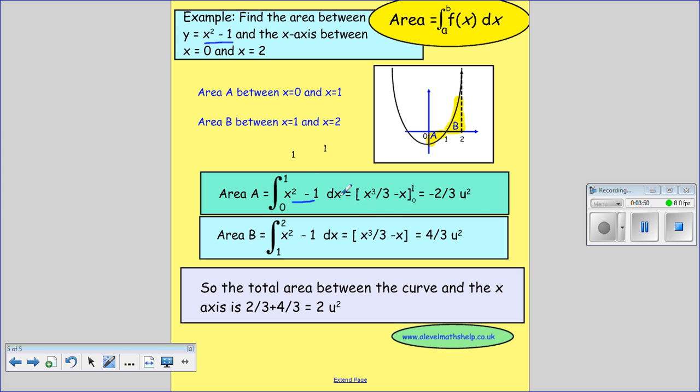Integrate, add one to the power, divide by the adjusted power. So this becomes x cubed over three minus x. We put our limits in here, then substitute in, and this gives us minus two thirds u squared. I'm using u for my unit squared.